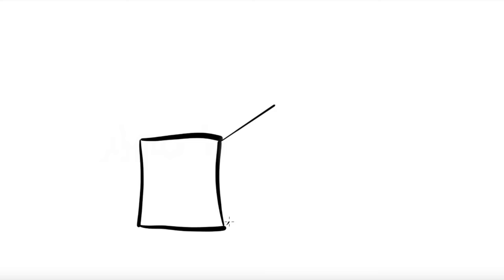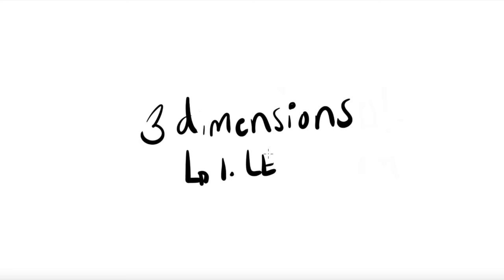Now if we add that extra dimension, it becomes 3D. Anything that's 3D is a form. The three dimensions are length, width, and height.